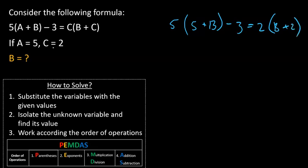Let's resolve the parentheses, we're working according to PEMDAS, so we have 25 plus 5B minus 3 equals 2B plus 4.